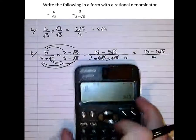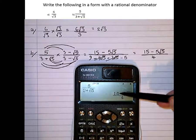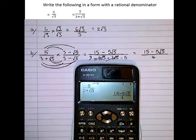Checking this on the calculator as we did before, just type the original surd in there. 5 over 3 plus root 5 equals 15 minus 5 root 5 over 4.